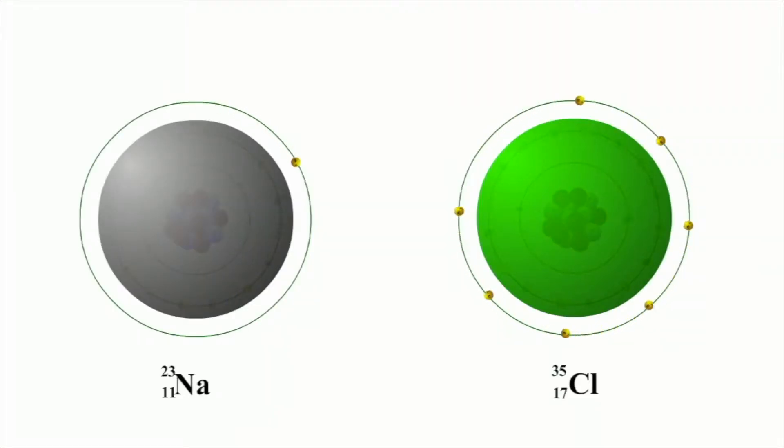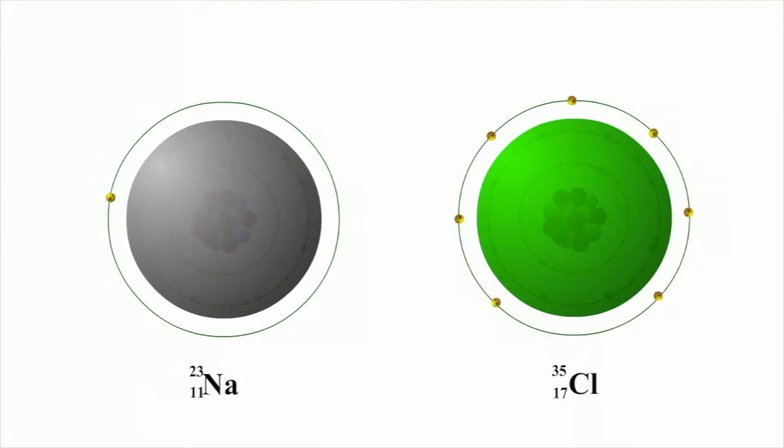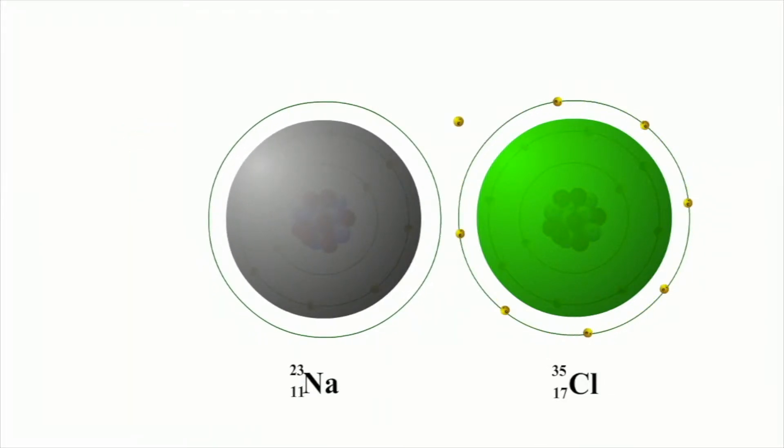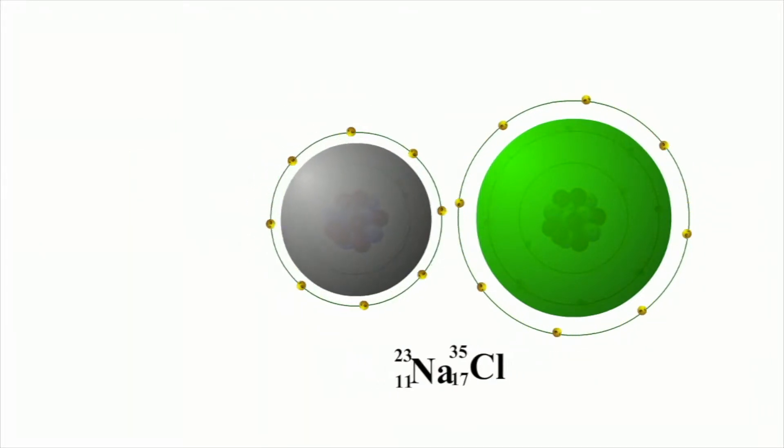An atom of chlorine has a high electron affinity, while sodium has a low ionization energy. As a result, chlorine takes sodium's single valence electron. The atoms of both elements thereby have complete outermost electron shells. This ionic bond forms a molecule of sodium chloride.